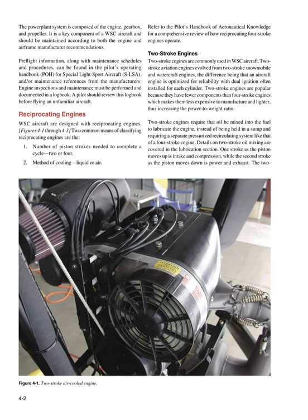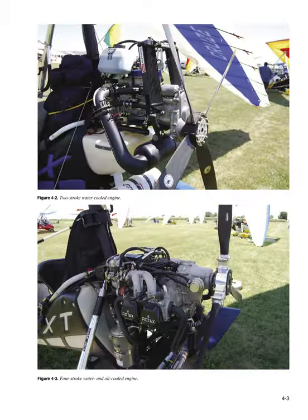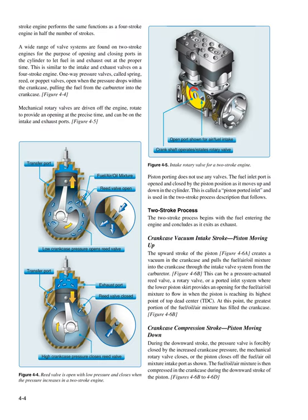In a two-stroke engine, the first stroke as the piston moves up is intake and compression, while the second stroke as the piston moves down is power and exhaust. The two-stroke engine performs the same functions as a four-stroke engine in half the number of strokes. A wide range of valve systems are found on two-stroke engines for the purpose of opening and closing ports in the cylinder to let fuel in and exhaust out at the proper time, similar to the intake and exhaust valves on a four-stroke engine.